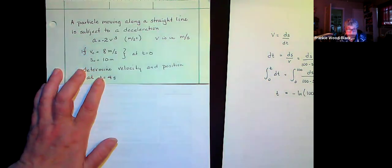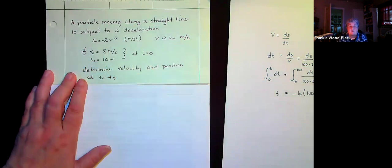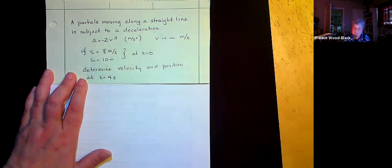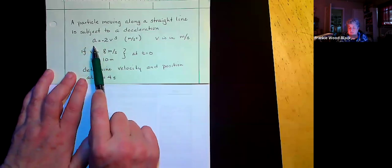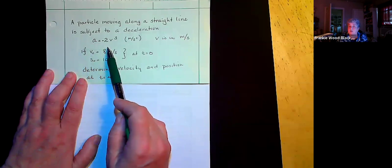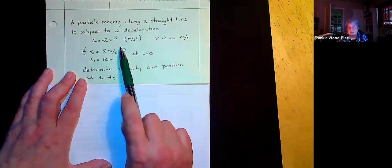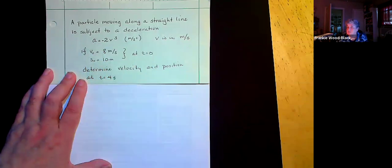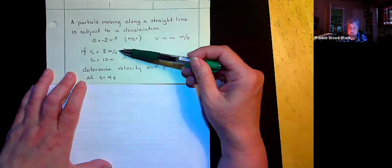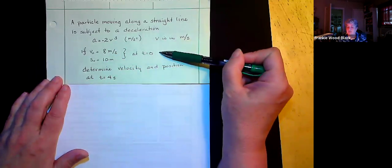Even though I didn't write the problem down initially correct, we know that deceleration is negative — sometimes they may say it's subject to an acceleration and give you a negative value, and that negative tells us it is a deceleration. We're told that the deceleration equals negative 2v³ meters per second squared. Note that the coefficient 2 must carry some units to make this dimensionally consistent. Our initial boundary conditions are: initial velocity of 8 meters per second, initial position of 10 meters, at time t equals 0. We want to determine velocity and position at t equals 4 seconds.